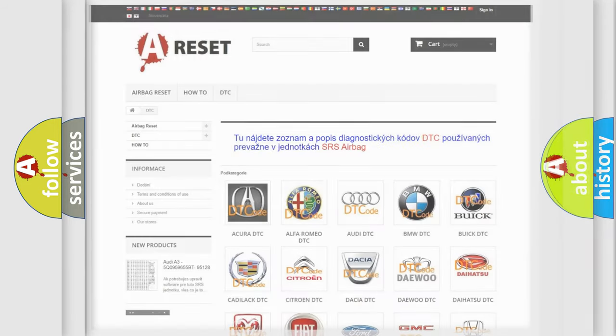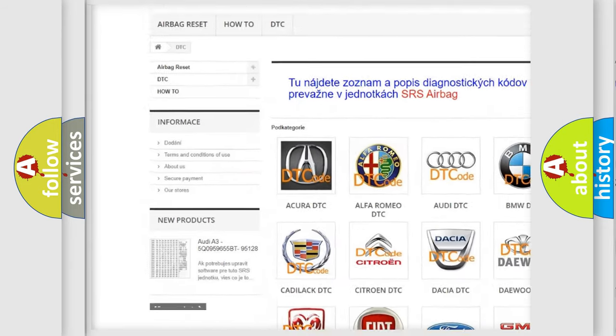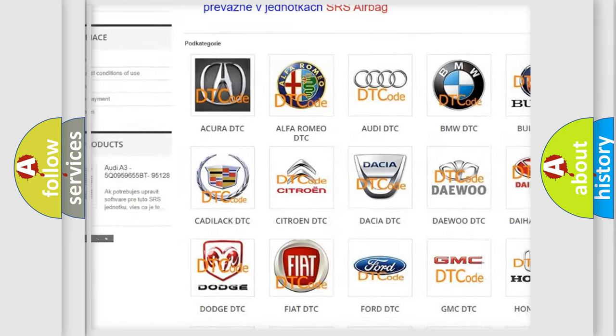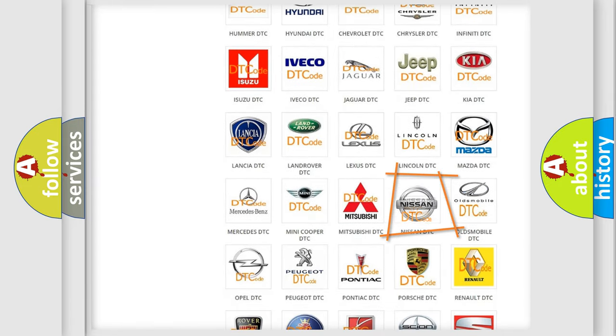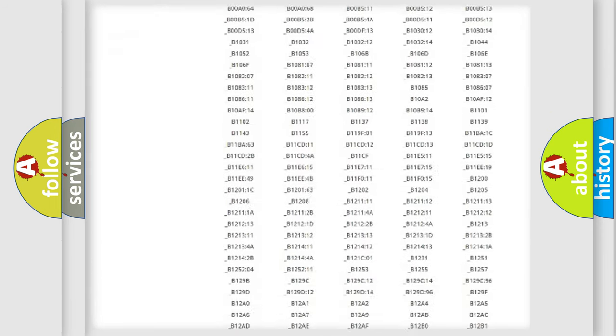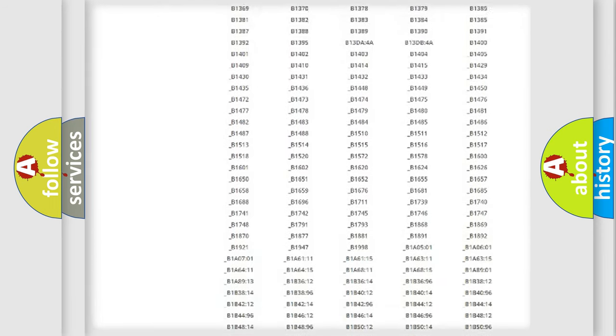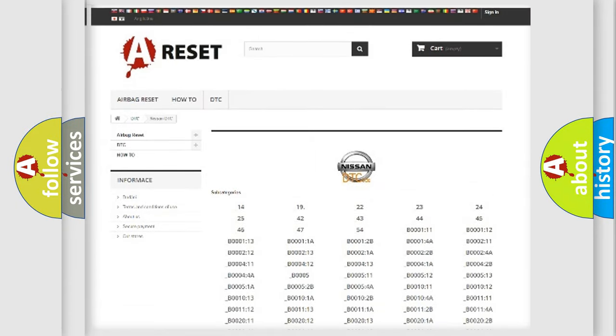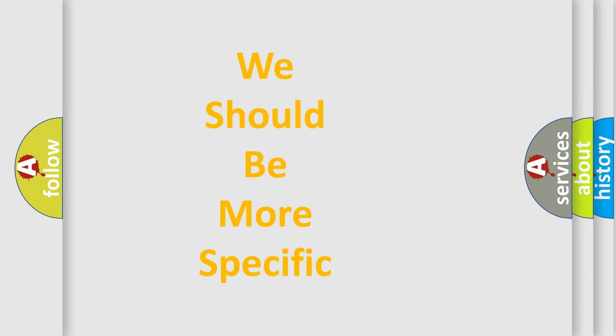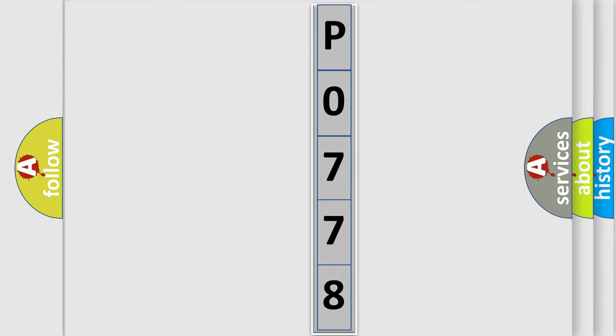Our website airbagreset.sk produces useful videos for you. You do not have to go through the OBD2 protocol anymore to know how to troubleshoot any car breakdown. You will find all the diagnostic codes that can be diagnosed in Nissan vehicles, and many other useful things. The following demonstration will help you look into the world of software for car control units. You can move the video a bit further.